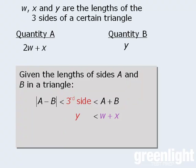Well, since lengths W and X have positive values, we know that W plus X must be less than 2W plus X.